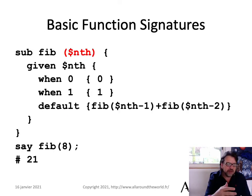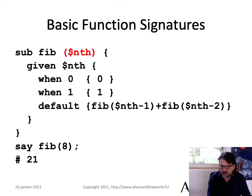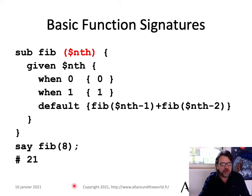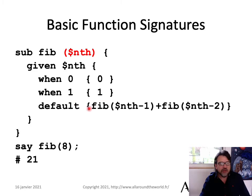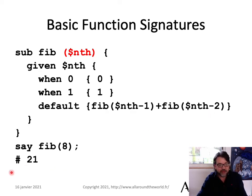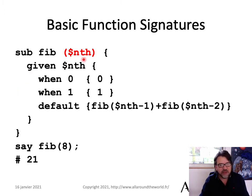Here's a basic function signature in Raku. We've got the signature, the variable name `nth`. When it's zero, we return zero. When it's one, we return one. The default is `fib(nth - 1) + fib(nth - 2)`. So `fib(8)` is 21. Everyone understands this; it's clear. The signature is very trivial — we see this in a lot of dynamic languages. Nothing fancy about that yet; we'll get there.